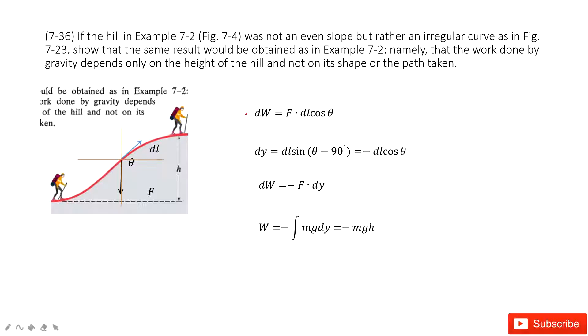In this one, we need to prove the work done by gravity depends only on the height of the hill, not on the shape or how it works the path taken.